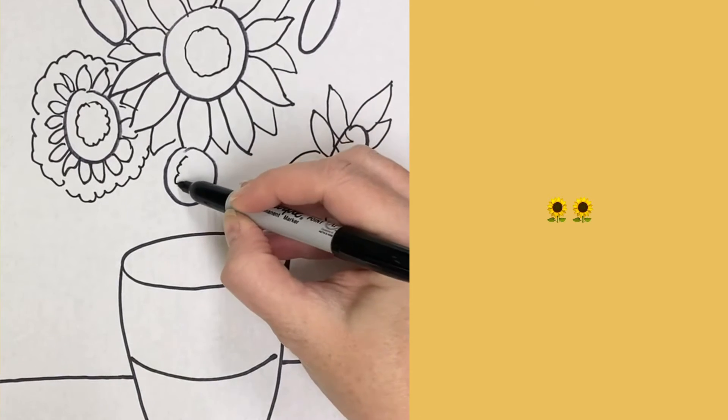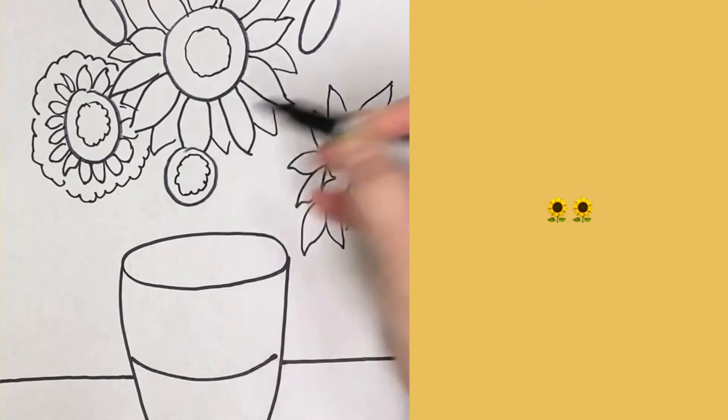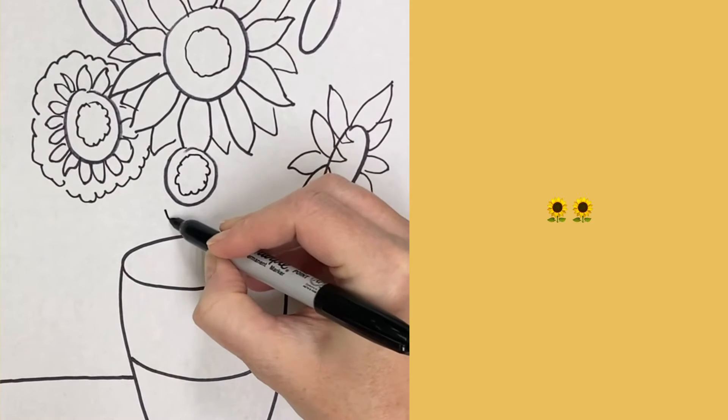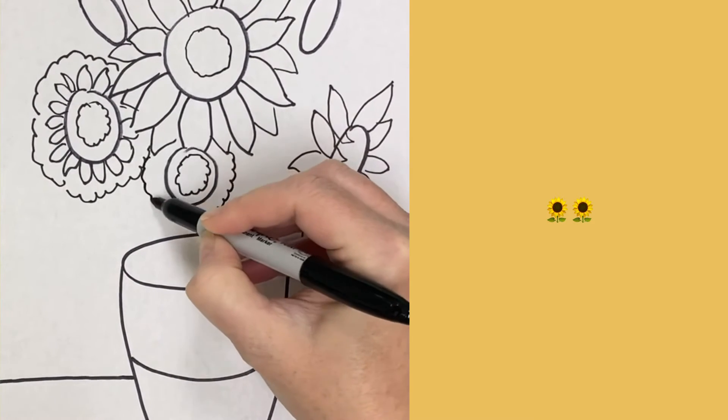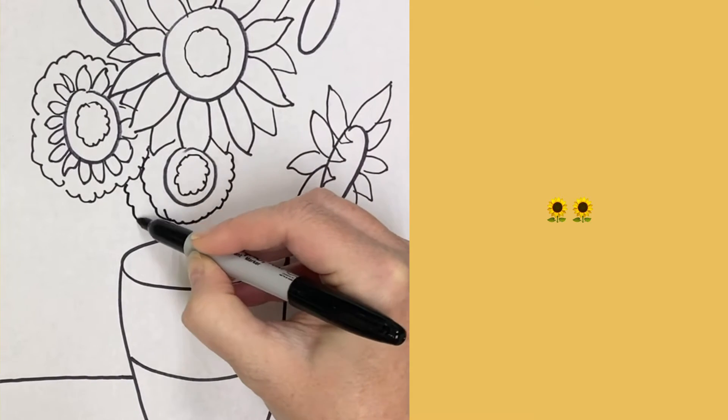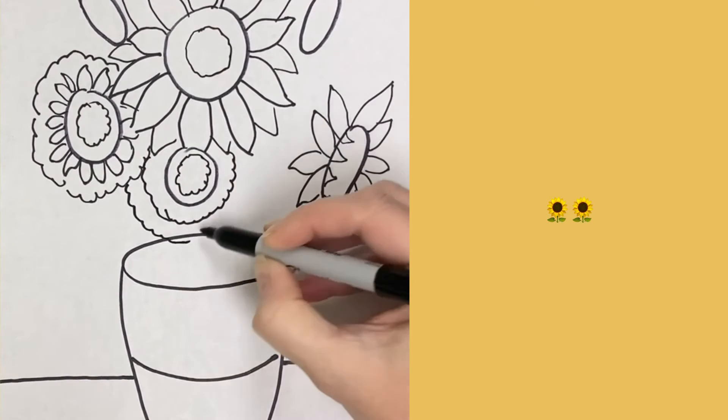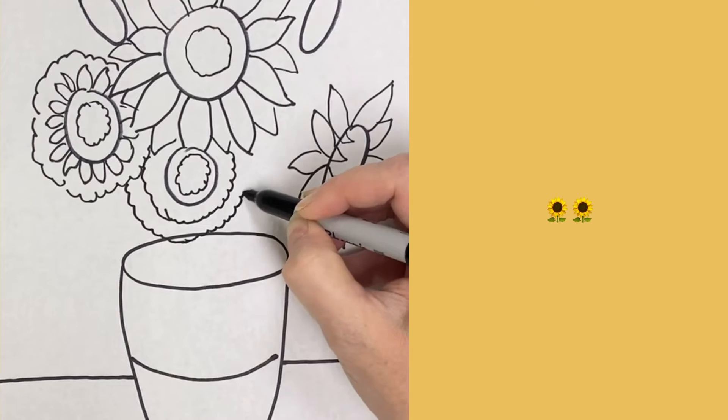This sunflower is overlapped by the one above it so that means that once I get to where that other one is I stop. I'm just going to put in a few bumpy curvy lines all the way around it and stop at the big one.